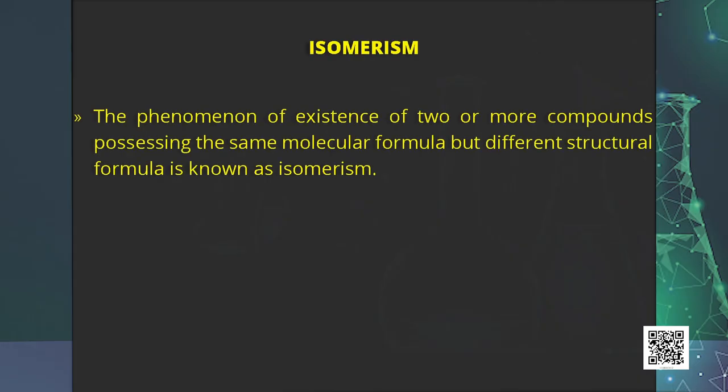The phenomena of existence of two or more compounds possessing the same molecular formula but different structural formula is known as isomerism. The term isomers comes from the Greek word 'iso' and 'miros', meaning made of same parts. Thus, isomers are compounds constructed from the same atoms, hence having the same molecular formula but different properties.